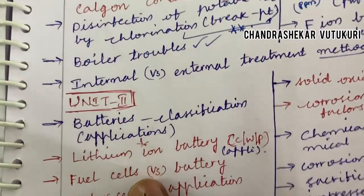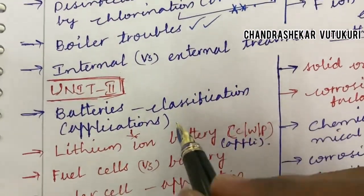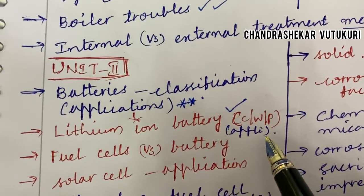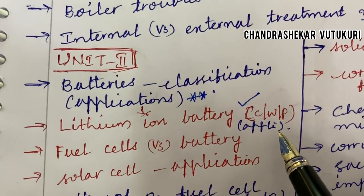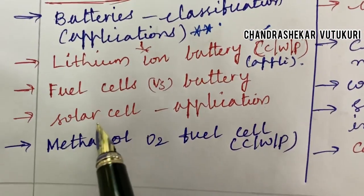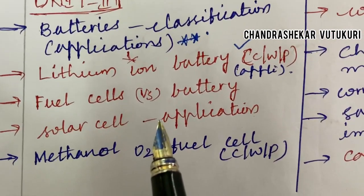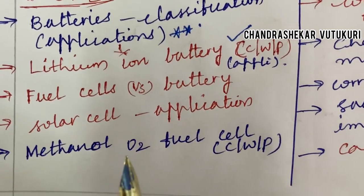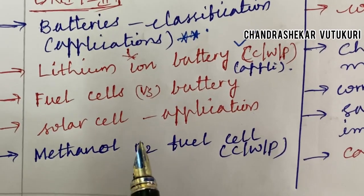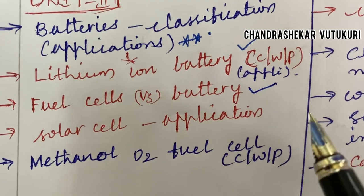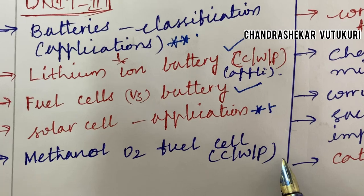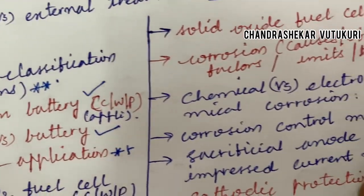Let's jump into Unit 2 — it is all about batteries, their classification, and applications, which is a topmost question. Lithium-ion cell construction, working principle, and applications are important. All drawings must be done only in pencil and labelled neatly. Work out very neat sketches to score full marks. I have uploaded a video on how to work out a theory paper as well as a mathematical paper to score good marks — I will share it in the comment section. Fuel cells versus batteries difference, solar cell and its applications, and methanol-oxygen fuel cell construction and working principle are also important.